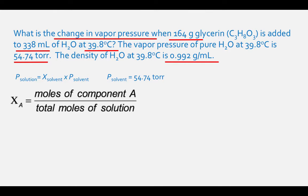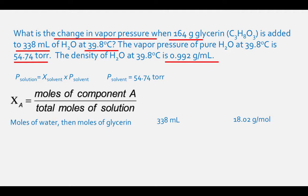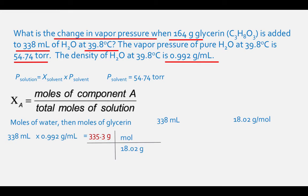Now we need to calculate the mole fraction of the water, which is the moles of water divided by the total moles of the solution. First, calculate the moles of water. We start with 338 milliliters of water. Using the density of 0.992 grams per milliliter, 338 milliliters times 0.992 grams per milliliter equals 335.3 grams of water. Then dividing by the molar mass of 18.02 grams per mole gives 335.3 divided by 18.02, which equals 18.61 moles of water.